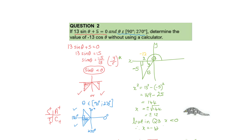Now we have all three sides (x = −12, y = −5, r = 13), the angle, and the sketch. The question asks for −13cos θ. From the sketch, cos θ = x/r = −12/13. So −13 × cos θ = −13 × (−12/13) = 12. The 13s cancel and we get 12.